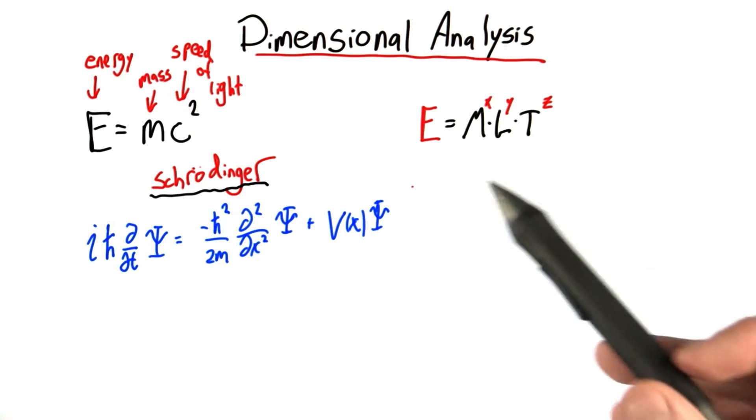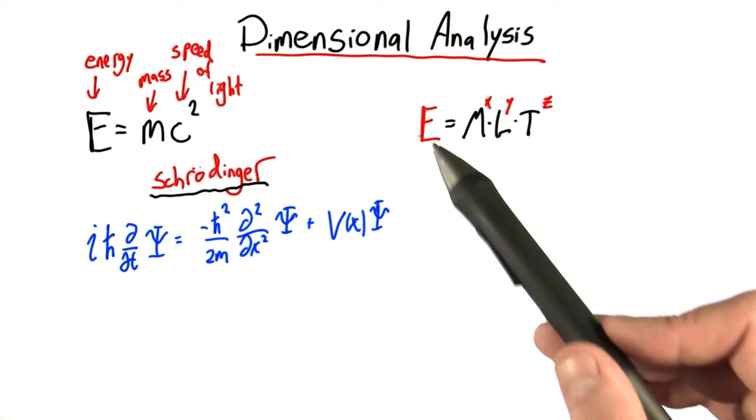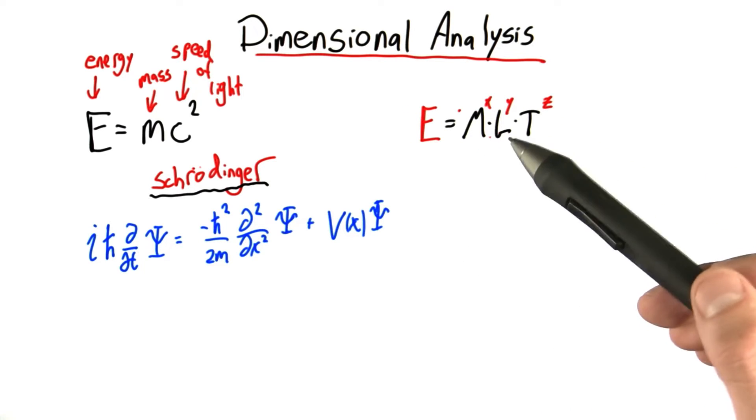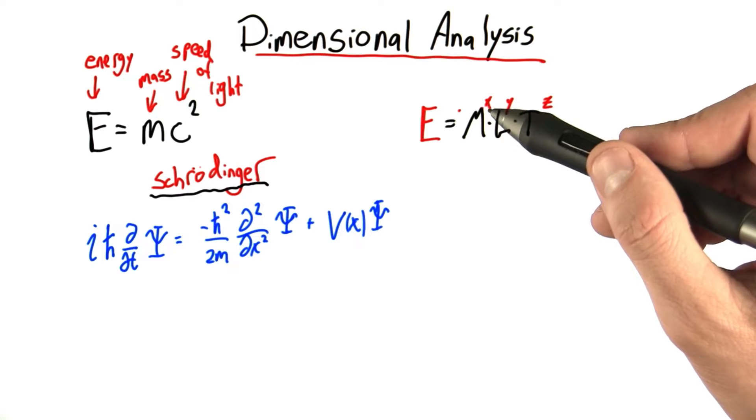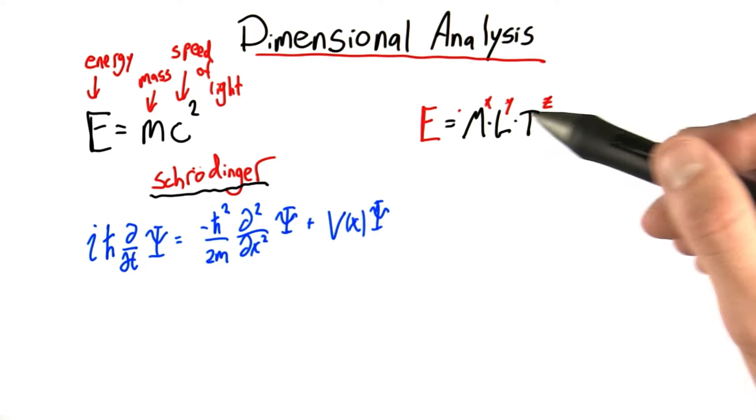The way we did dimensional analysis was, we realized we can write the units of just about any physical quantity in terms of mass, length, and time. So mass raised to some power, length to some power, and time to some power.